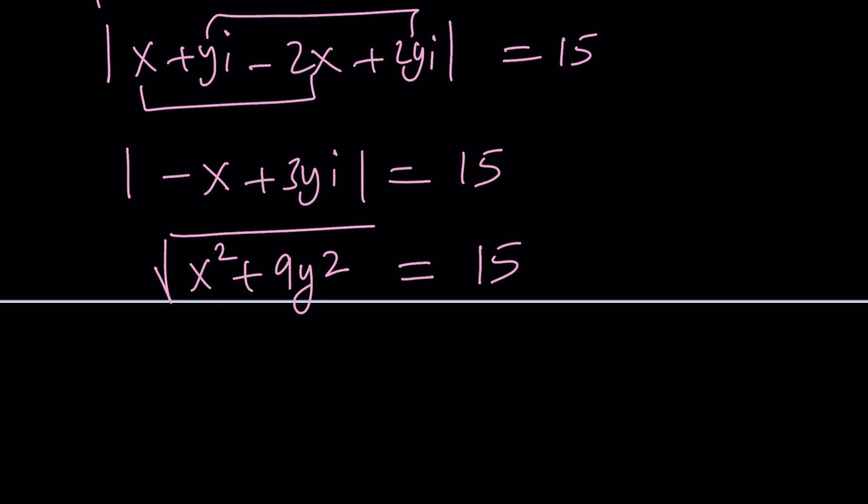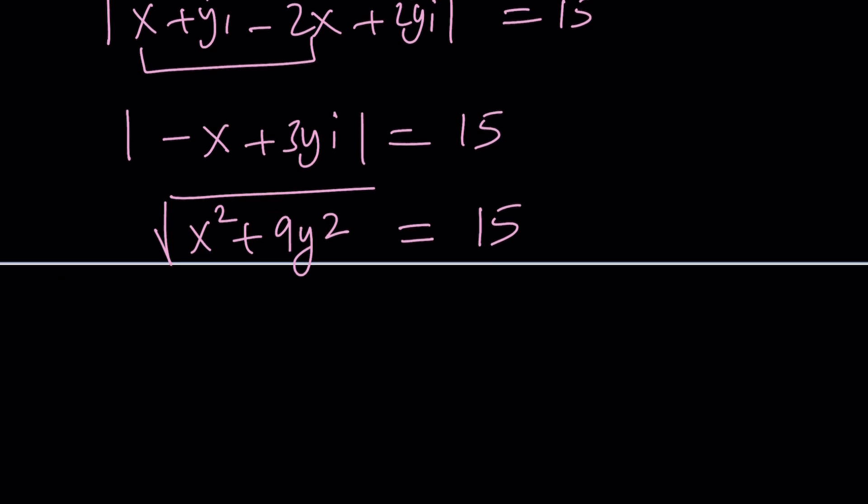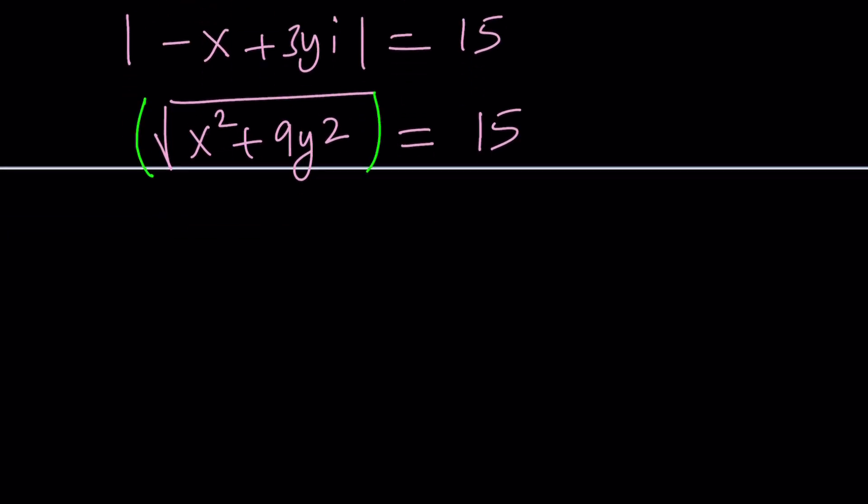This gives me an equation in x and y, which is why we call this a locus problem. Let's square both sides. If you square both sides, you're going to get x² + 9y² = 225.